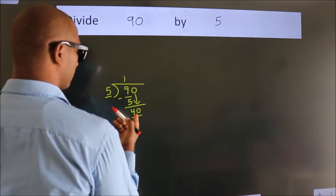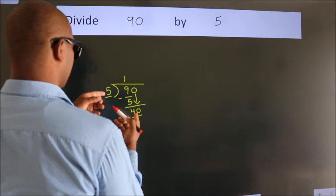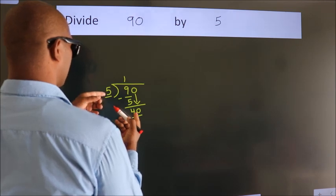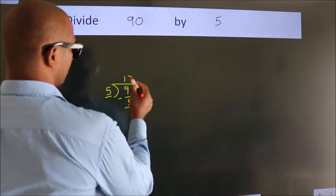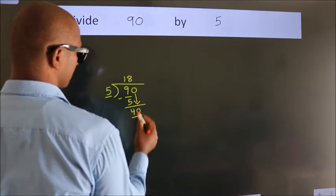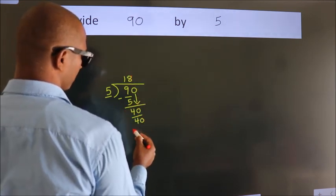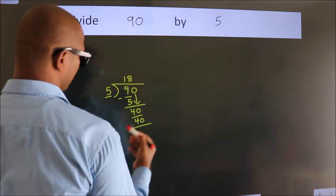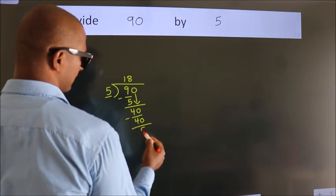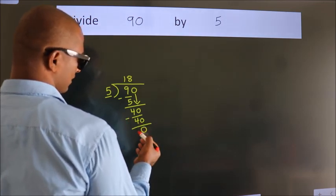When do we get 40 in the 5 times table? 5 eights are 40. Now we subtract. We get 0.